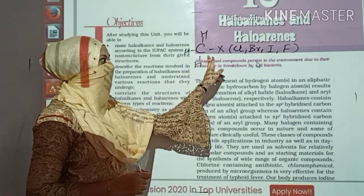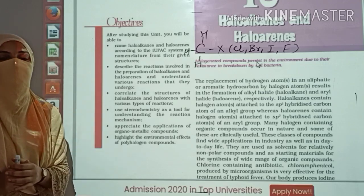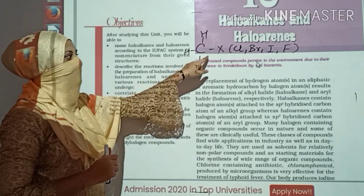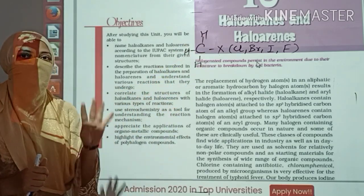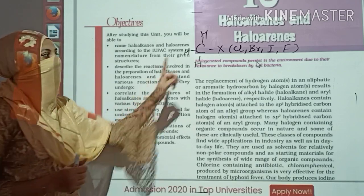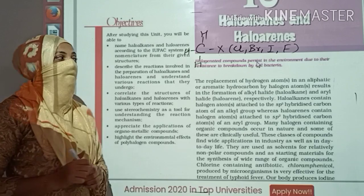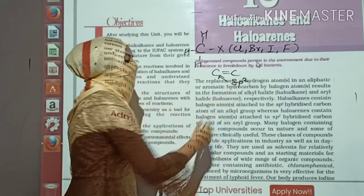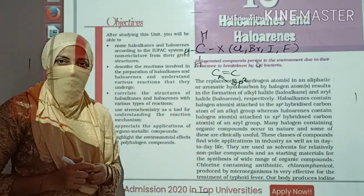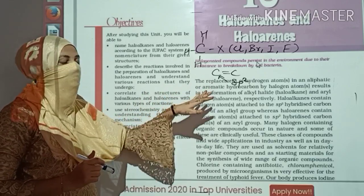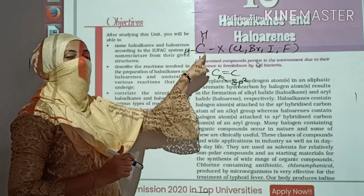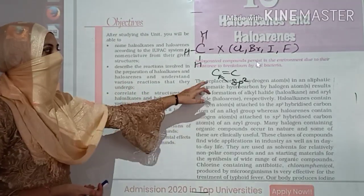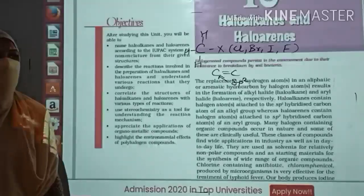Now let me tell you one more important thing. The carbon we are observing right now is your SP3 hybridized carbon. How will you remember which is SP3 and SP2? The carbon which has all four hands free, holding four groups, is called SP3 hybridized carbon. But the carbon which is involved in the double bond is known as SP2 hybridized carbon.